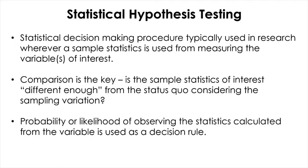The status quo represents the Null Hypothesis — when nothing happens, when no change is assumed. The question is: where is your statistic located, and how likely is it to see the statistic at that location? That is the comparison you're going to make to reach a decision. The decision rule is essentially the probability or likelihood of observing the statistic at a certain location. That is the essence of statistical hypothesis testing.